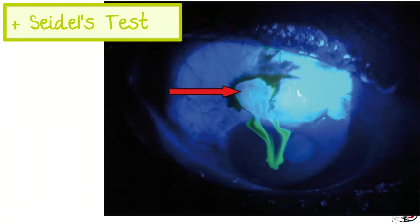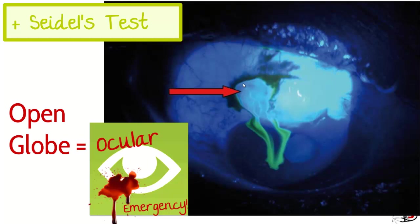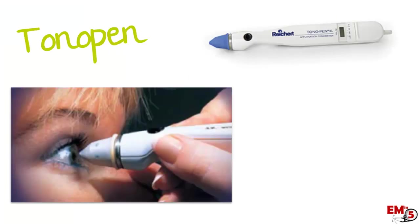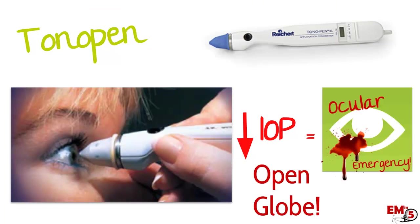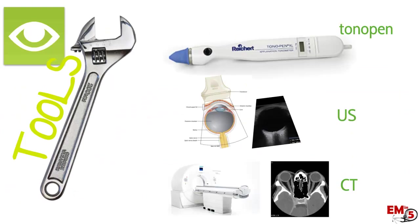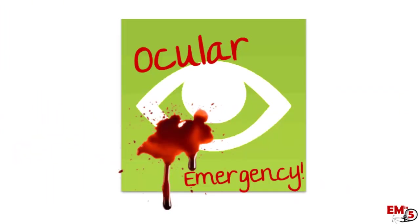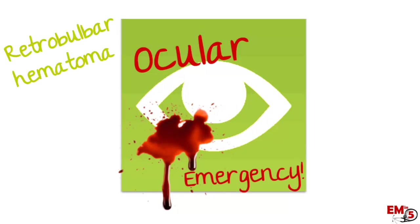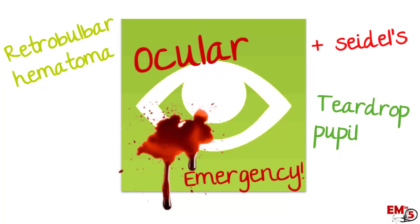Two other concerning tests: a positive Seidel's test means that on fluorescein exam you see vitreous leaking out of a hole in the globe — that obviously means open globe, so call ophthalmology. Also, if you're doing the tonopen exam and you see low intraocular pressure, that is again very concerning for open globe. Stop touching the eye and call ophthalmology immediately.